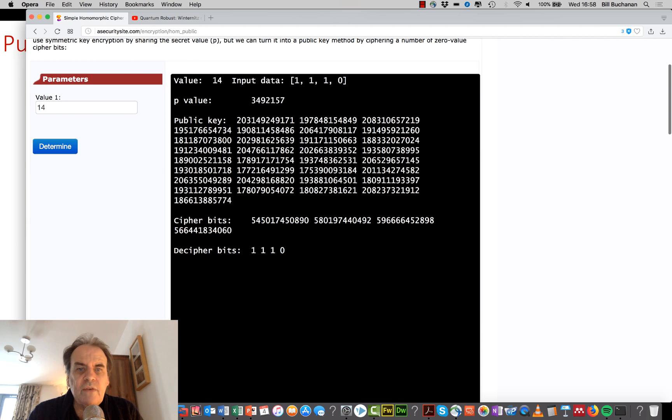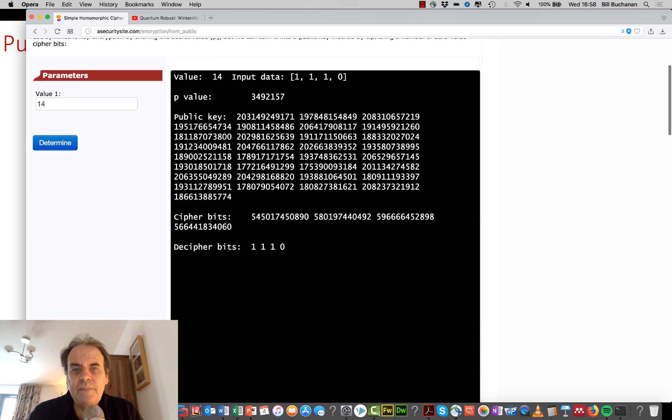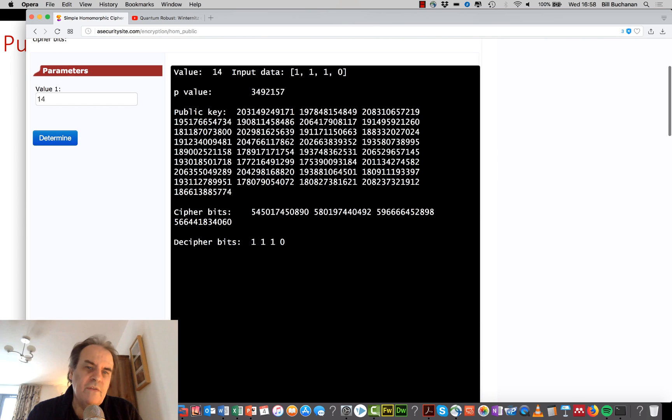We then take a random set of those values, and then use that to cipher our bits. And we can see here we've decoded it successfully.